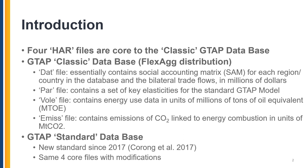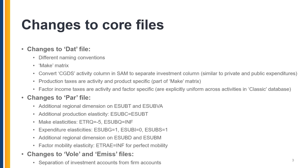In 2017 we made some key changes to the GTAP model which required some changes to the database. We are now calling this new version the standard database as opposed to the classic database. It contains the same four core files but with modifications. Let's walk through the changes to the core files beginning with the DAT file. The first change involves the naming conventions for many of the parameters included in the file, as described in the background documentation.